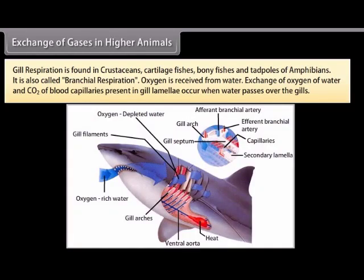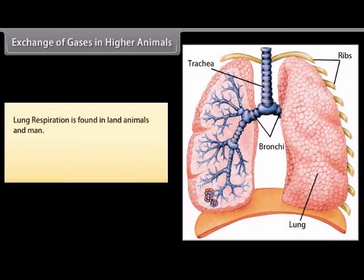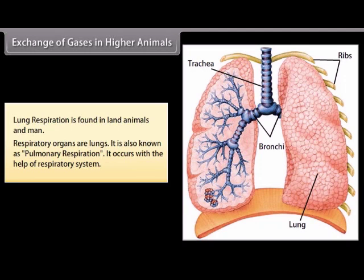Gill respiration is found in crustaceans, cartilage fishes, bony fishes, and tadpoles of amphibians — also called branchial respiration. Oxygen is received from water, and exchange of oxygen and CO2 occurs when water passes through gill lamellae. Tracheal respiration is found in all insects; respiratory organs are highly branched air tubes called trachea, connected to air by small openings called spiracles. Lung respiration is found in land animals and man — also known as pulmonary respiration, it occurs with the help of the respiratory system.